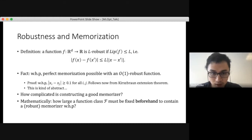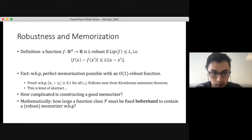The idea is that an adversarial perturbation changes the input a little bit, and the Lipschitz property says any small change in the input leads to a small change in the output, so we should be robust to adversarial perturbations. This is a stronger condition than being Lipschitz only in most places, but it's a mathematically clean and useful notion, and it's at least as strong as being adversarially robust.